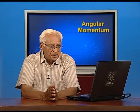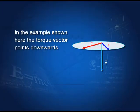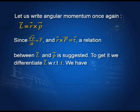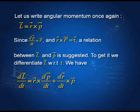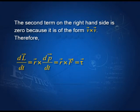Torque is always perpendicular to both r and F because it is a cross product. Let us write down the expression for angular momentum again: L = r × p. Differentiating with respect to t gives dL/dt = r × (dp/dt) + (dr/dt) × p. The second term is dr/dt = v, and p also contains v, so it is v × v = 0. Therefore dL/dt = r × (dp/dt), and since dp/dt = F, we get dL/dt = r × F, which is the torque.